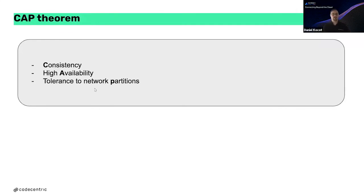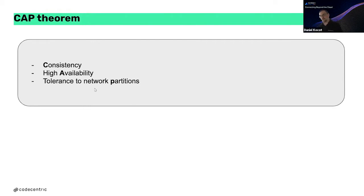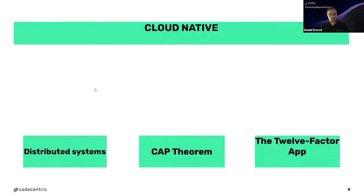With the CAP theorem, you can only achieve two of the three properties. So mainly you will have consistency and high availability, or you will have consistency and tolerance to network partitions. This is what you can achieve, and it is a core concept when thinking about cloud native systems.